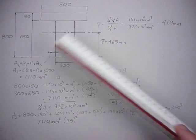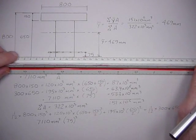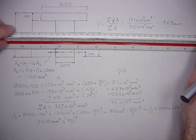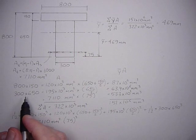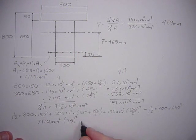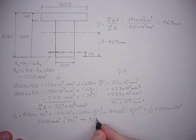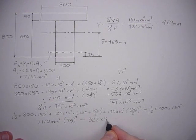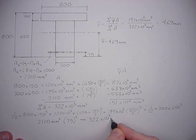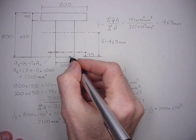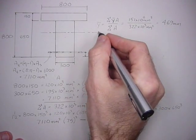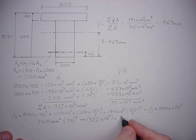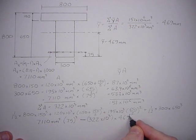To find the moment of inertia about this axis, we take the area of the whole section that's effective, which is 322 times 10 to the third. Using the parallel axis theorem, we minus the area of the whole section, 322 times 10 to the third, times its centroid to the centroid we want to find, which is 469 squared.